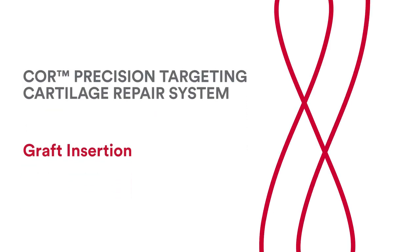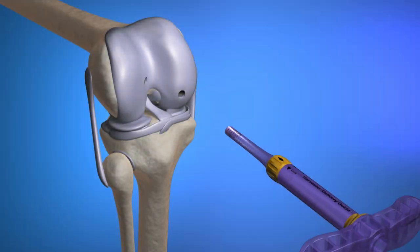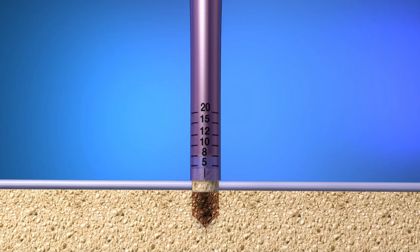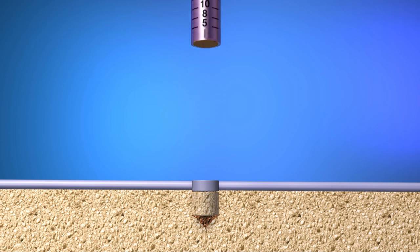Graft insertion. Place the guide over the recipient site. Insert the plunger into the harvester or delivery guide. Gently tap the plunger with a mallet until it contacts the T-handle. Remove delivery guide. Universal TAMP may be used to fine-tune graft placement.